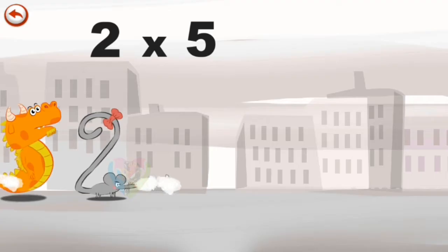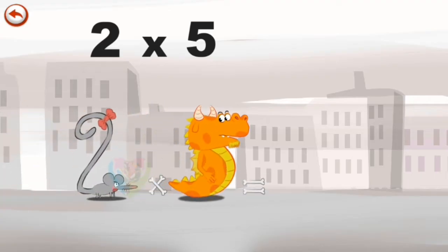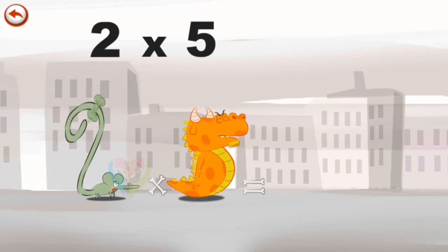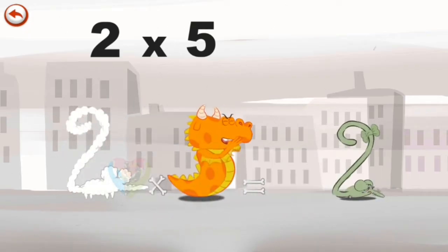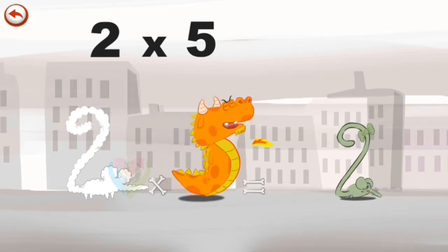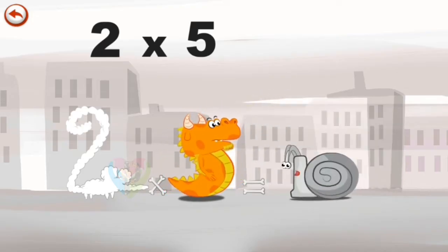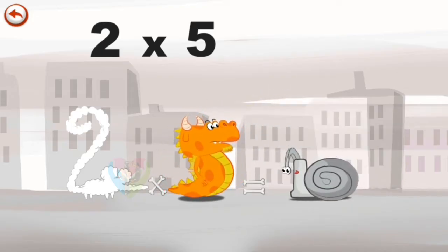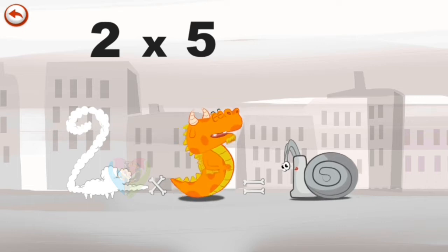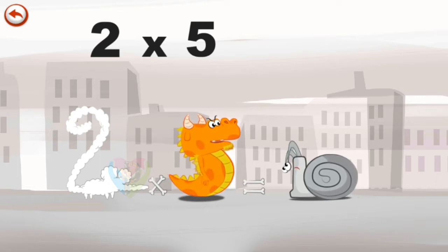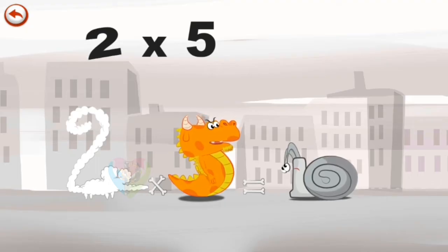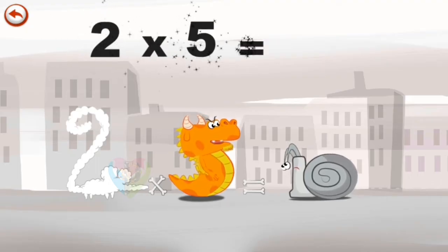What's the story of 2 times 5? When Two Squeaks comes across Flaming 5, she is so frightened, she runs away as fast as she can. But Flaming 5 breathes out an enormous flame and changes the frightened mouse into a boiling hot snail. The head of the snail takes the shape of a 1 and its shell the shape of a 0. 2 times 5 is 10.